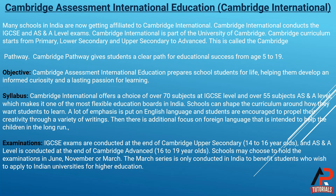IGCSE exams are conducted at the end of Cambridge upper secondary for students aged 14 to 16. AS and A level exams are conducted at the end of Cambridge advanced for students aged 16 to 19. Schools can choose to hold examinations in June, November, or March.